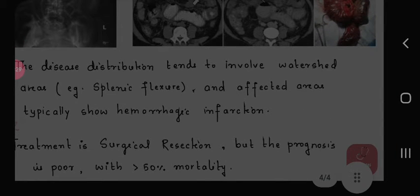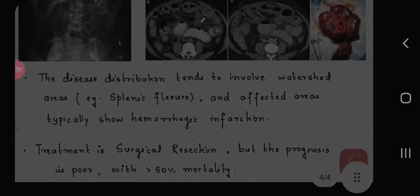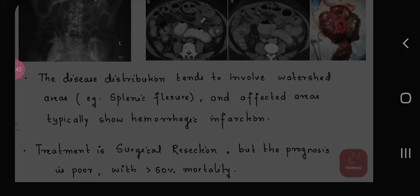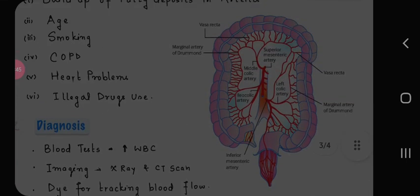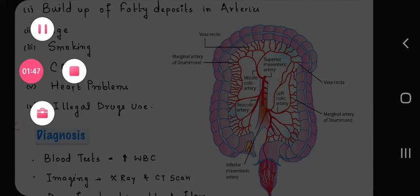The disease distribution tends to involve watershed areas like the splenic flexure. Affected areas typically show hemorrhagic infarction. Treatment is surgical resection, but the prognosis is poor with greater than 50% mortality.